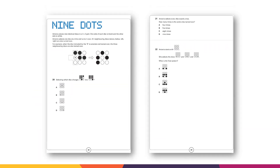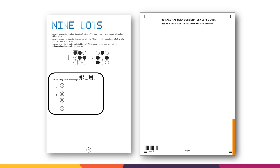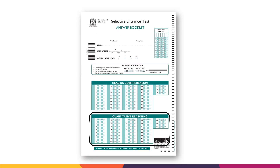To answer the questions, choose the best answer for each question out of four options: A, B, C, or D. Remember you can use blank space in the question booklets for working out. There is also space on the back of the booklet for any rough working out you may like to do — rough working out is not marked. In the answer booklet, shade your answers for the quantitative reasoning test in the designated section.